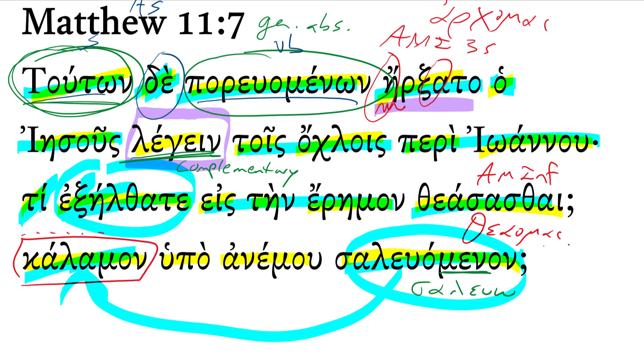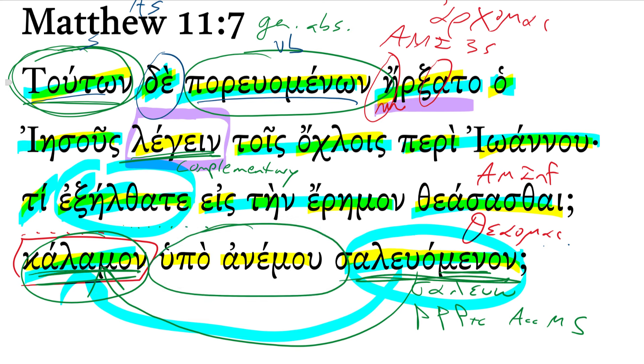And this is - you can see that menon morpheme - this is a present passive participle. It's accusative, masculine, singular, to match the accusative, masculine, singular noun it's modifying. Again, there's the implied: did you go out to see a reed shaken by the wind?